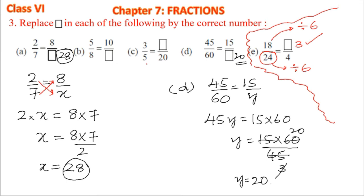For example (e), to get 20, multiply 5 by 4, and think about what multiplies with 2 to get the required number. You can think and try the remaining questions on your own.